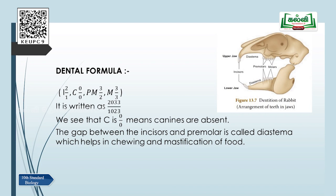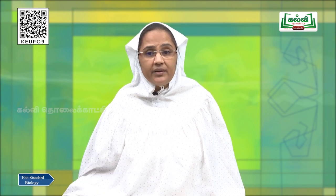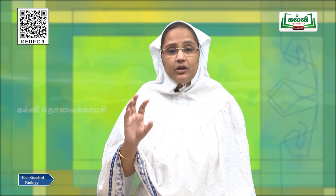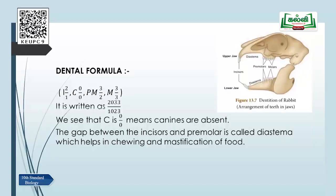There is a long gap between the incisors and the premolars called the diastema — meaning there are no teeth in that area at all. The function of the diastema is to help in chewing and mastication of food, allowing the rabbit to keep working the food in its mouth with the help of the salivary glands.